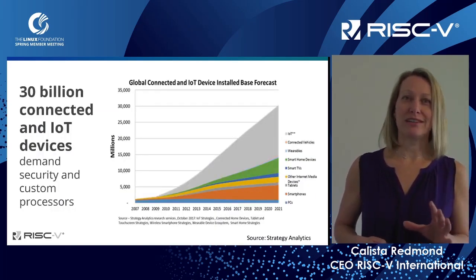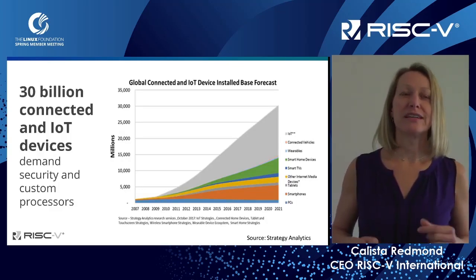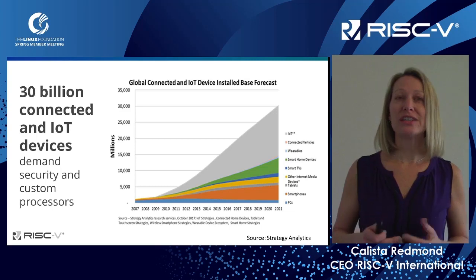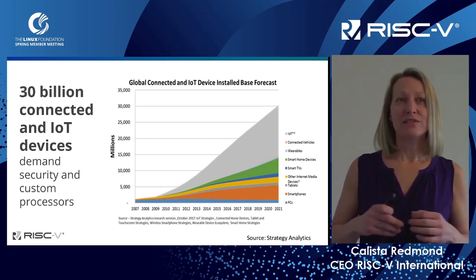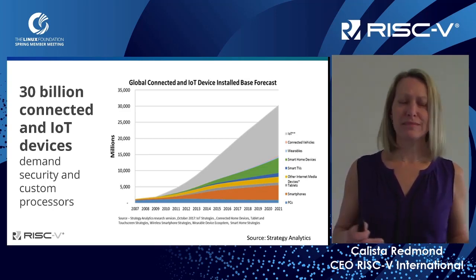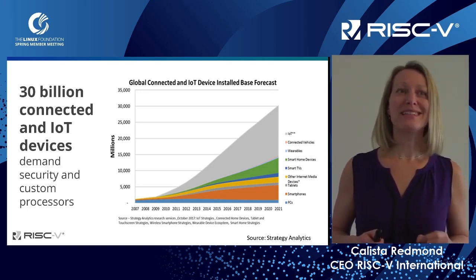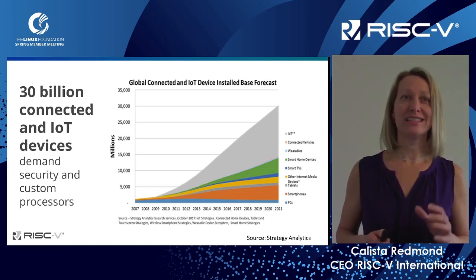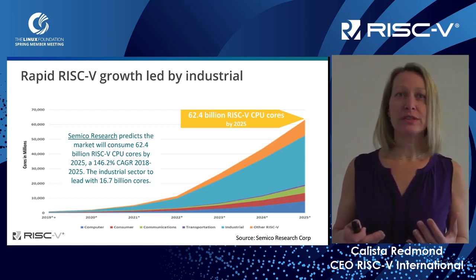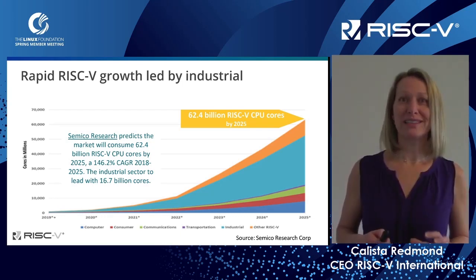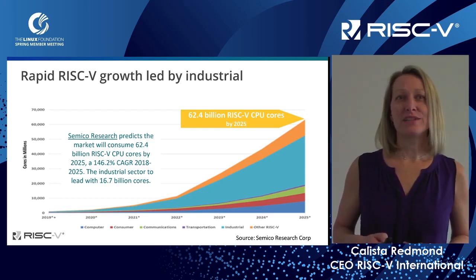The graphs are all going in the same direction. There's an absolute explosion in IoT and other connected devices. These devices demand security and custom processors. These are the smallest and the most prolific in use today. IoT, ranging from phones to automotive to industrial and many other applications — 30 billion connected devices are on course today. RISC-V has a huge stake in that market. In fact, the predictions are that RISC-V will capture 62.4 billion RISC-V CPU cores in just the next few years. This report by SemiCo points out industrial as the leading participant in this new frontier.